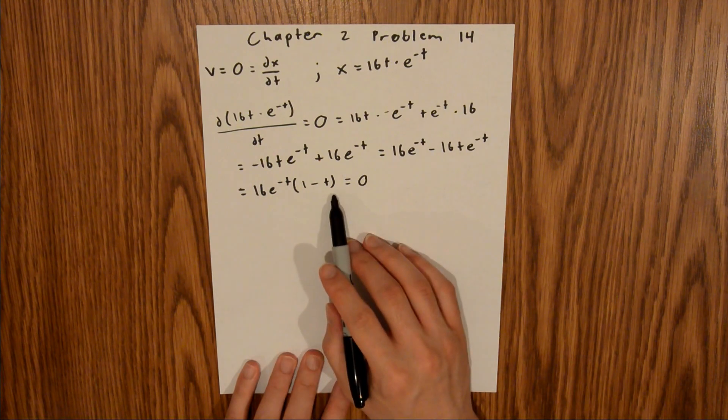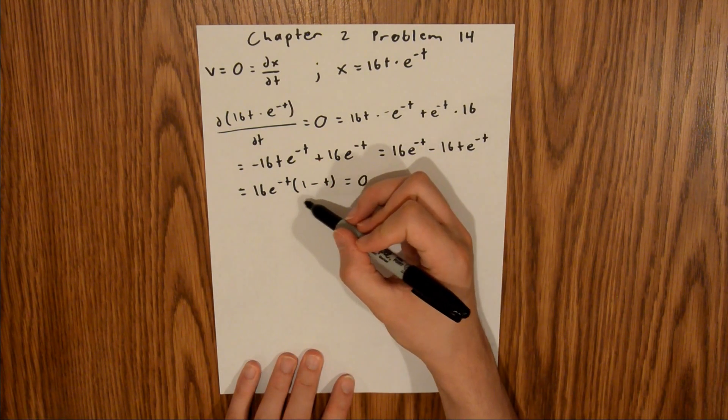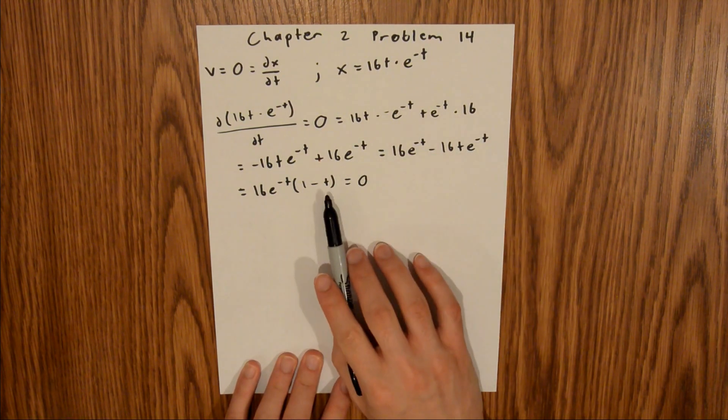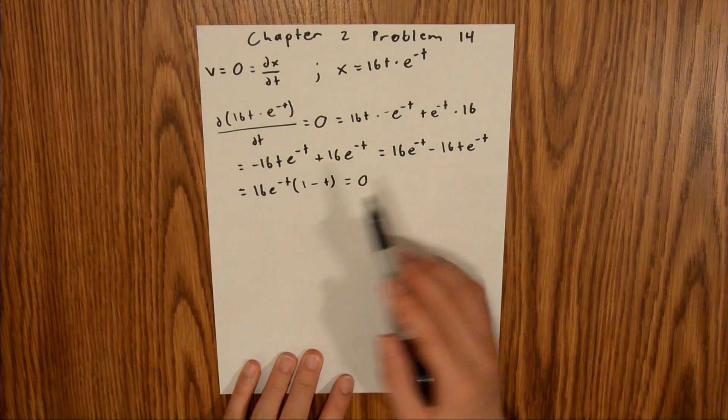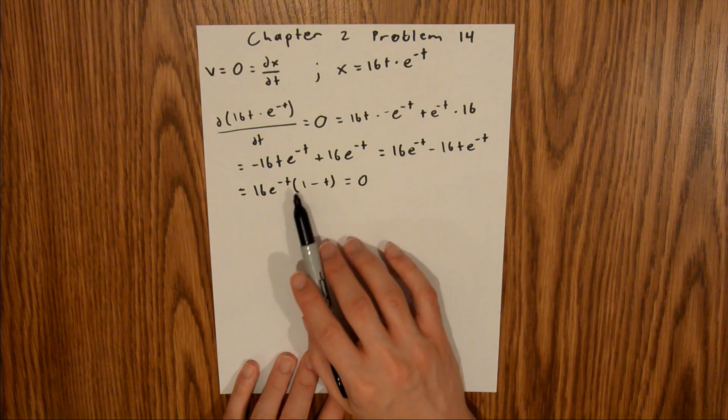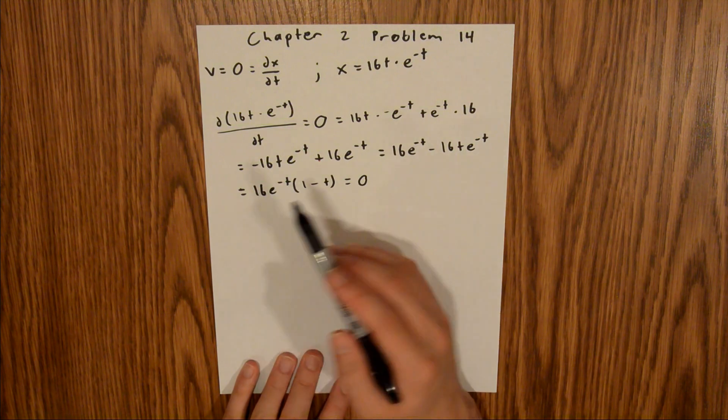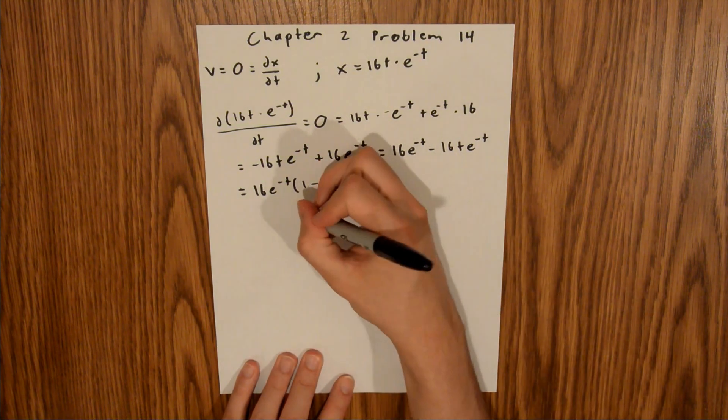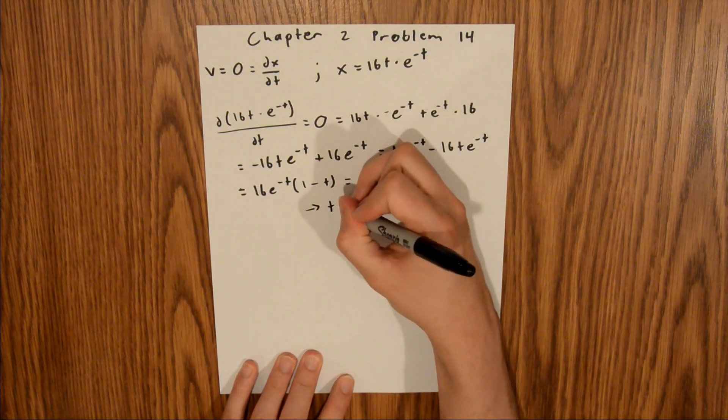In order for this term to be 0, we need this term right here to be 0. That means that t has to be 1. Because if t is 1, this is 1 minus 1, which is 0, and 0 times this term will be 0. So t is equal to 1.